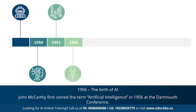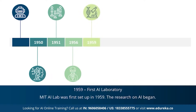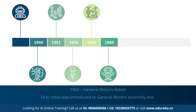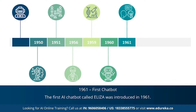1956 marked the most important year for artificial intelligence — John McCarthy first coined the term 'artificial intelligence.' This was followed by the first AI laboratory, the MIT AI lab, set up in 1959 and dedicated to AI research. In 1960, the first robot was introduced to the General Motors assembly line, and in 1961, the first AI chatbot called Eliza was introduced.